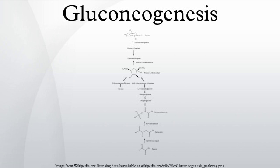Whether even-chain fatty acids can be converted into glucose in animals has been a long-standing question in biochemistry. It is known that odd-chain fatty acids can be oxidized to yield propionyl-CoA, a precursor for succinyl-CoA, which can be converted to pyruvate and enter into gluconeogenesis. In plants, specifically seedlings, the glyoxylate cycle can be used to convert fatty acids into the primary carbon source of the organism.